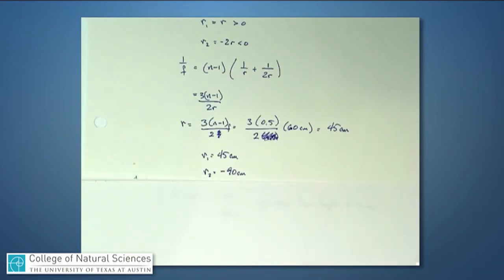r2, to be answered correctly, I should say minus 90 centimeters, because it's twice the radius, but remember it's a negative number.